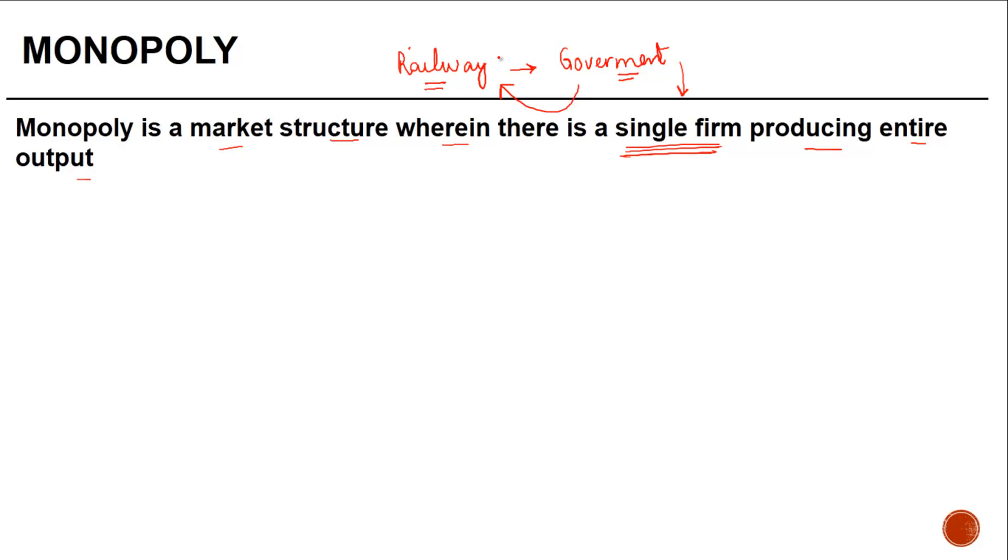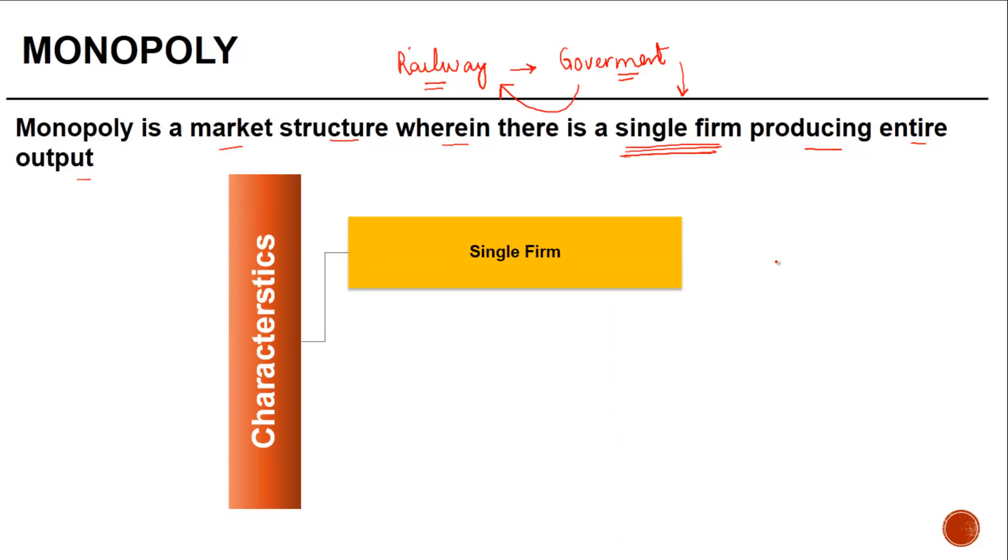What are the causes or the features of monopoly? The first characteristic is that there is a single firm which produces the output. Since there is a single firm, is there any distinction between the firm and the industry? Normally an industry would comprise of more than one firm, but in case of monopoly the firm and industry is more or less one and the same thing.